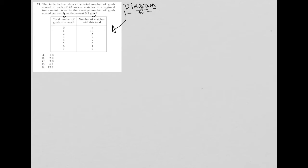An average is just the sum of all of the things that I'm averaging — in this case, the number of goals — divided by the number of things that I have, in this case matches. I know that there are 43 soccer matches, so I already know from the beginning that my denominator must be 43. Now the tricky part comes in with how do I determine my numerator?